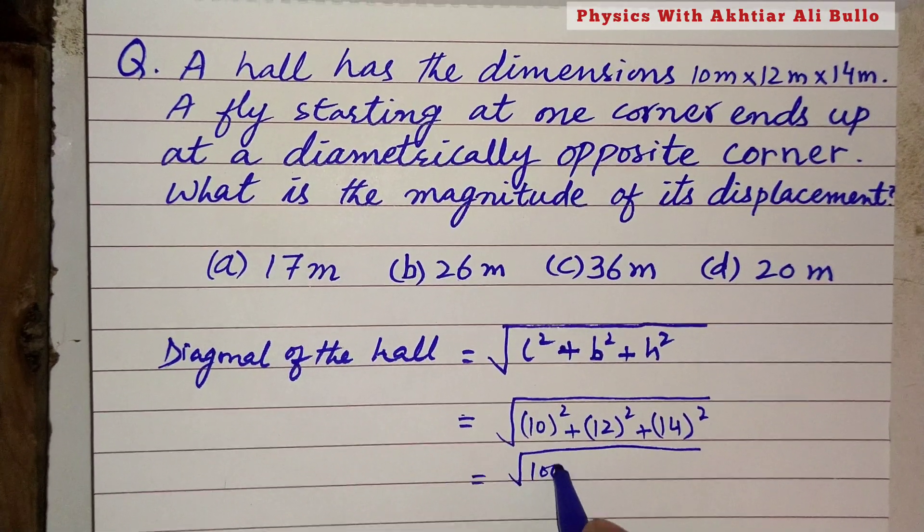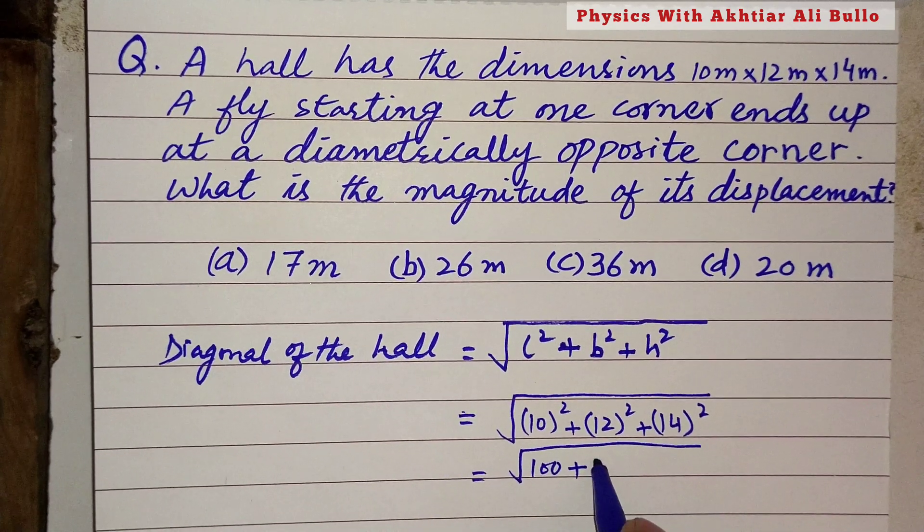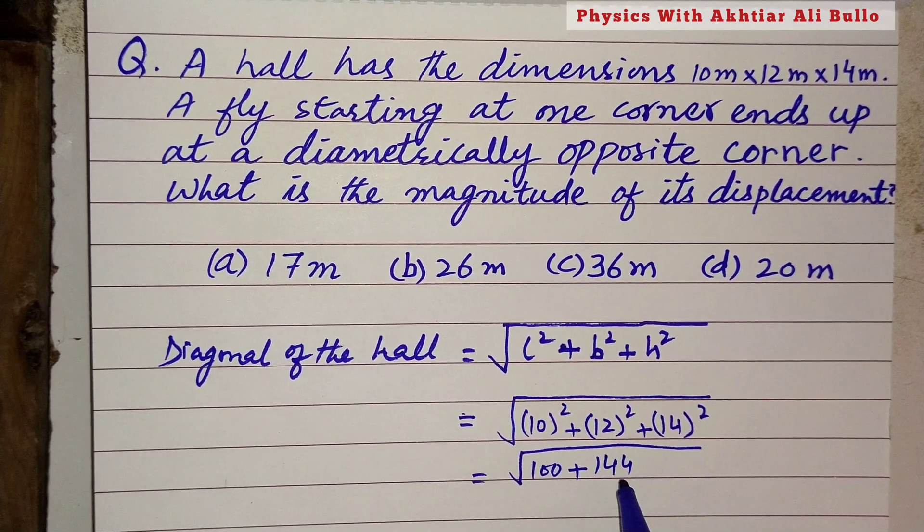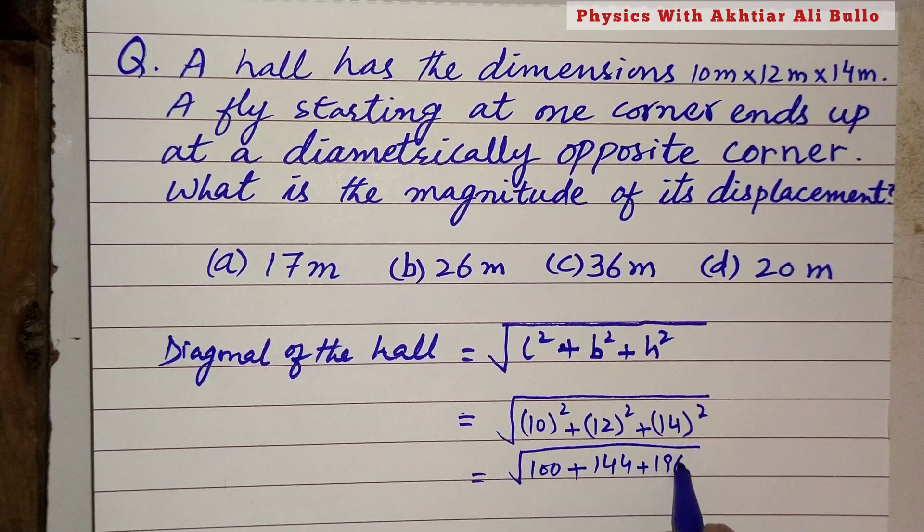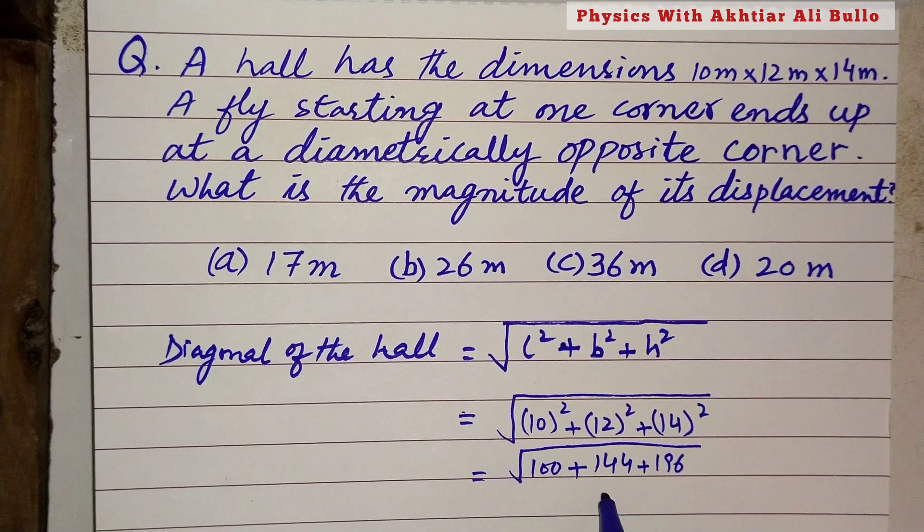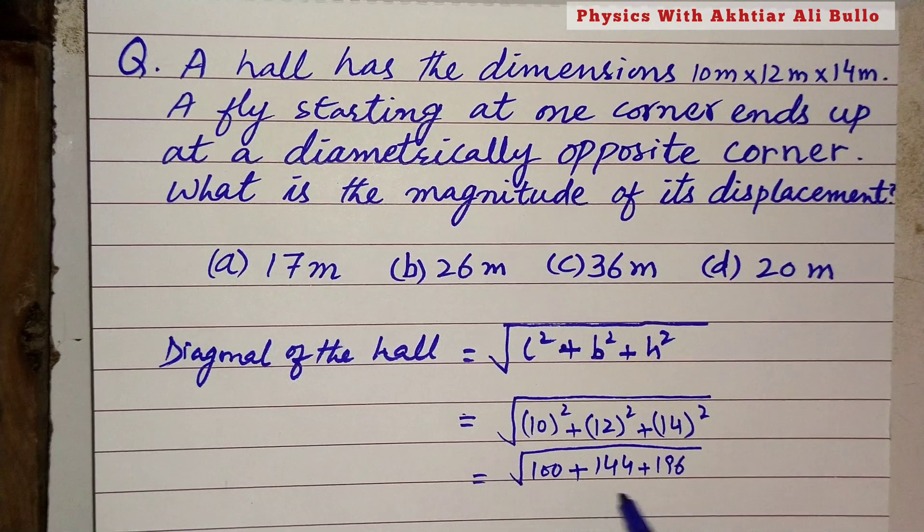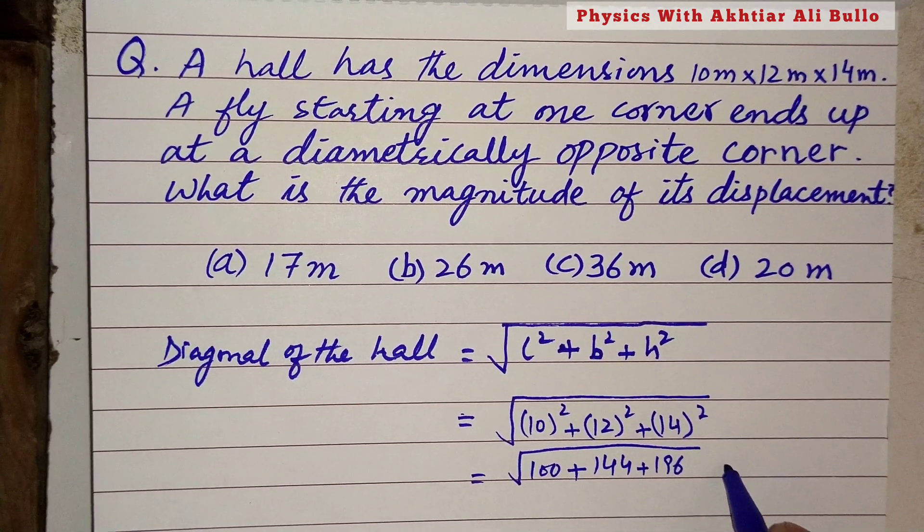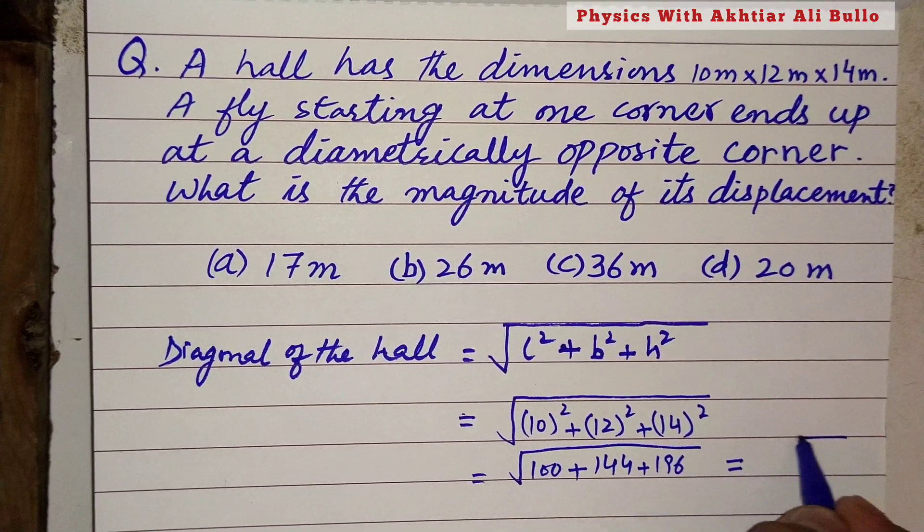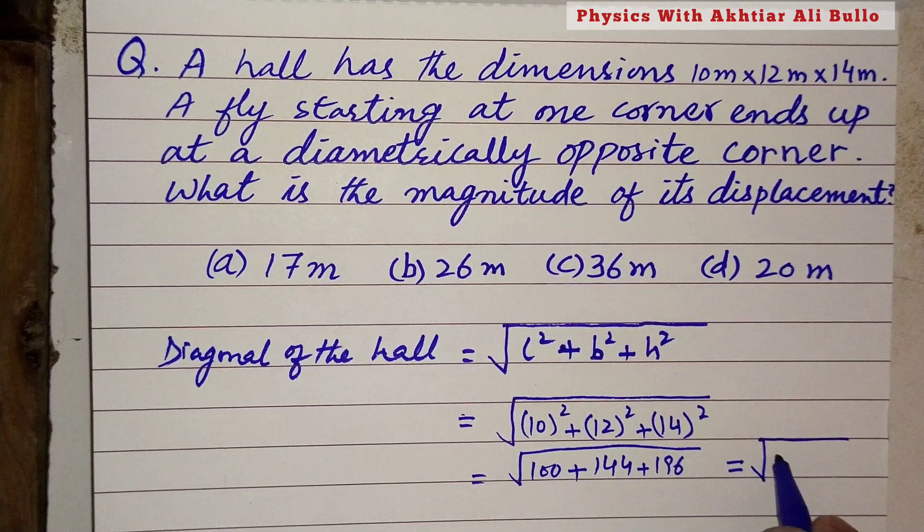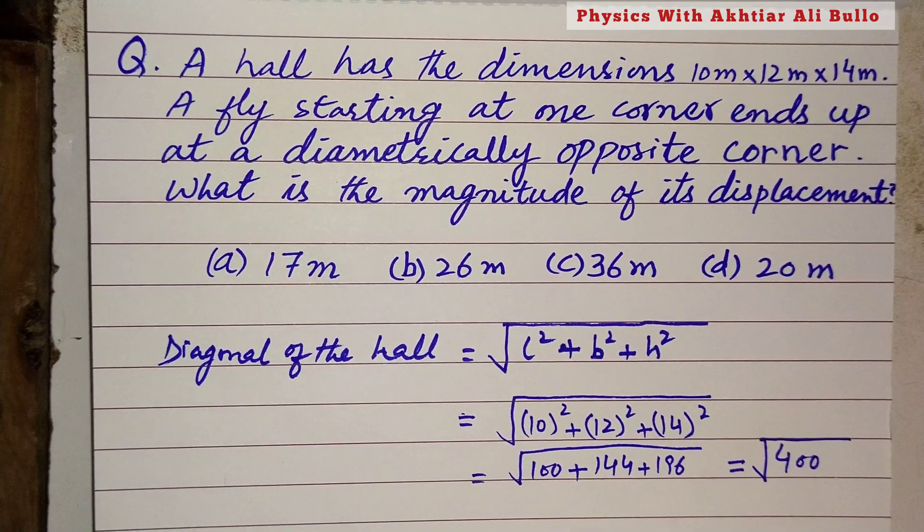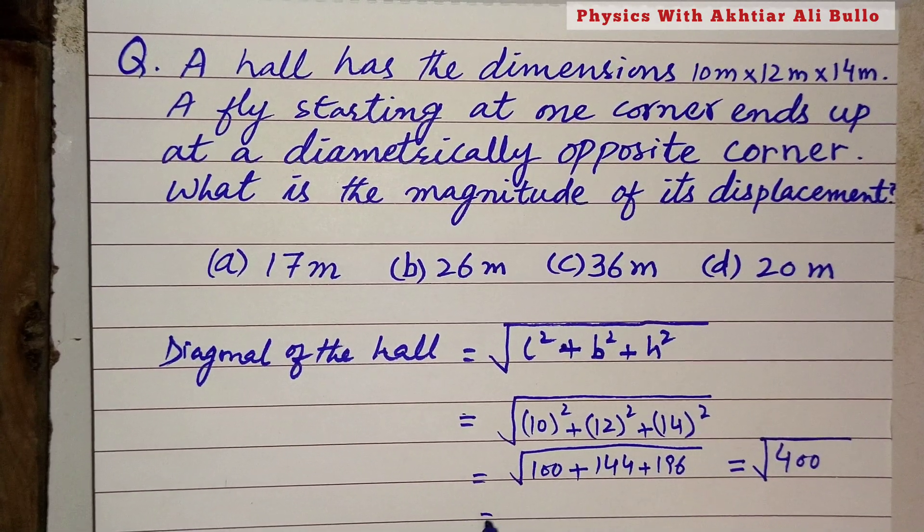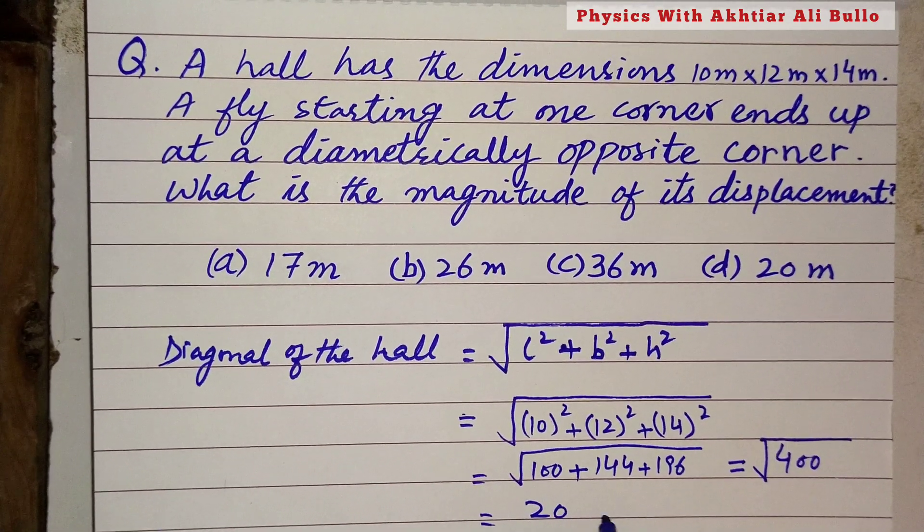The square of 10 is 100, the square of 12 is 144, and the square of 14 is 196. When we add these values, we get the square root of 400, so the square root of 400 is 20 meters.